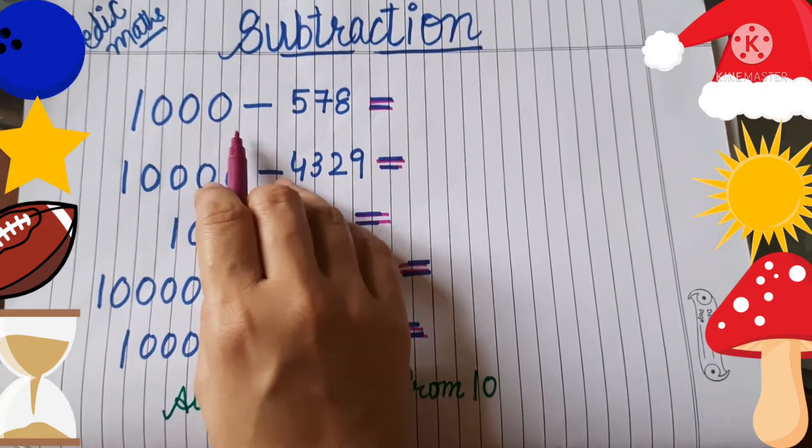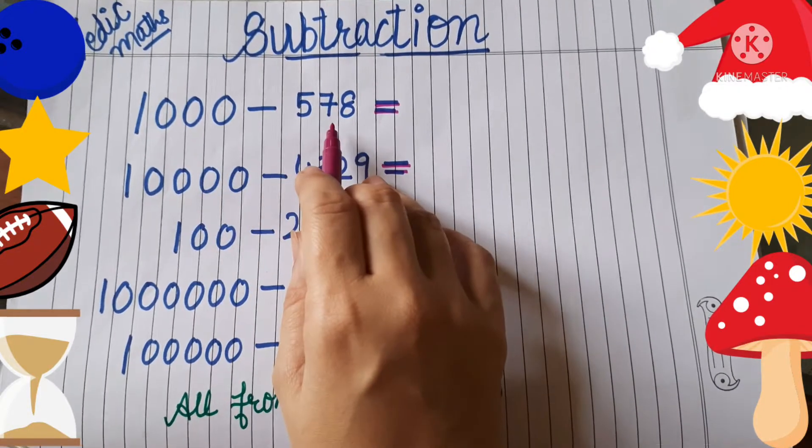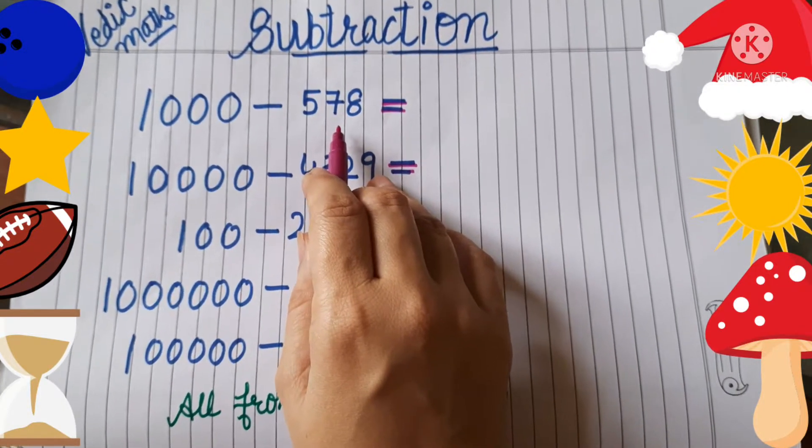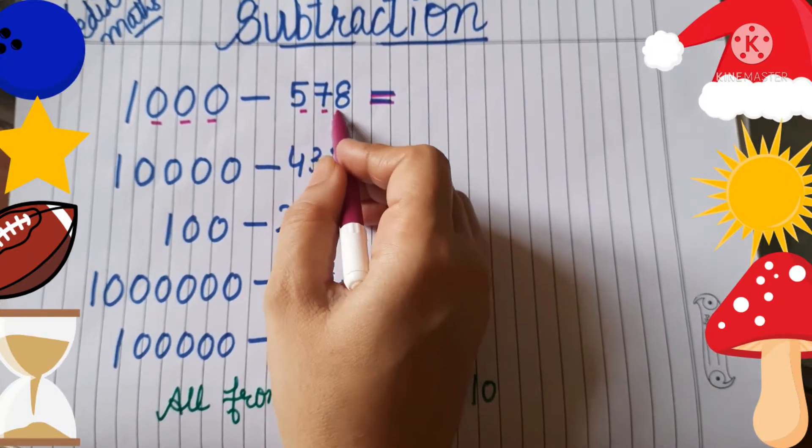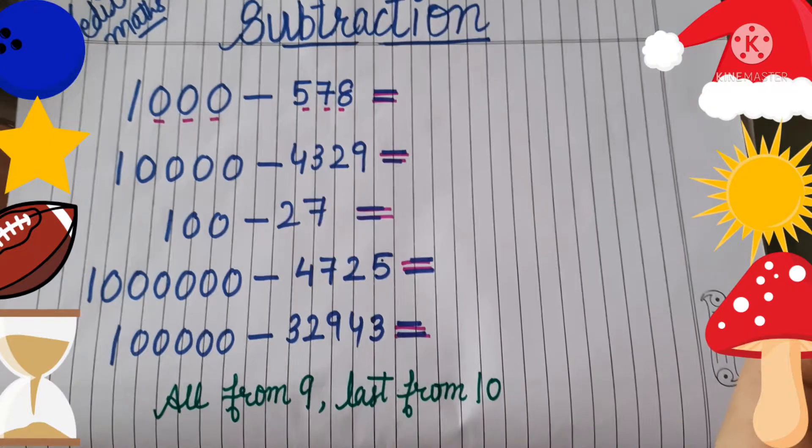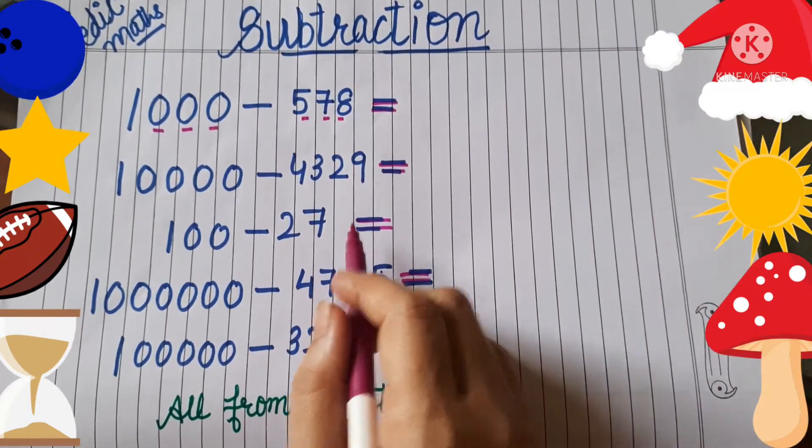See, here is the number 1000 and we have 578. You can see there are three zeros and the numbers are already 3. Now we will subtract it. What we have to do?